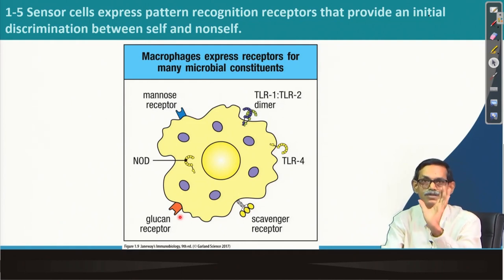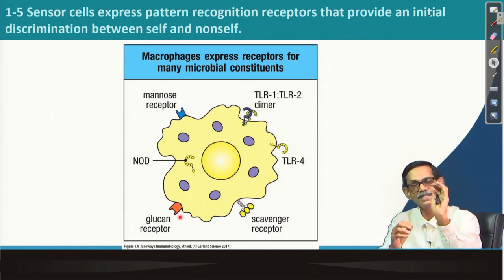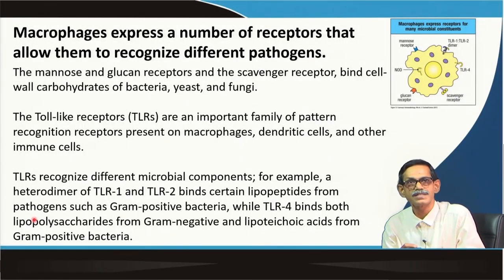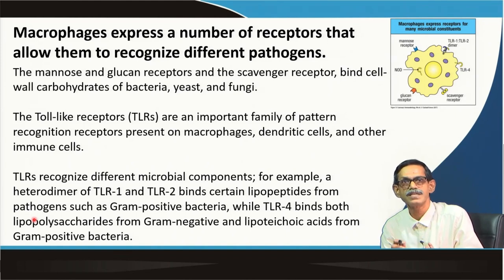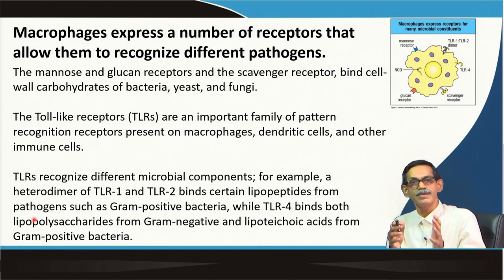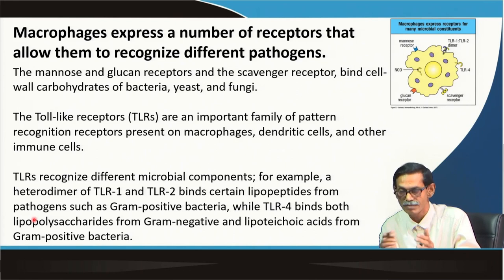Outside the cell, these receptors are present. So if anything foreign comes, they can hold, touch, or sense it and determine what to do next. Macrophages express a number of receptors that allow them to recognize different pathogens — they are the mannose and glucan receptors, and toll-like receptors. Macrophages and dendritic cells have these kinds of receptors to recognize foreign or infectious pathogens.